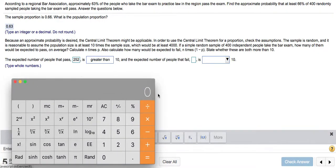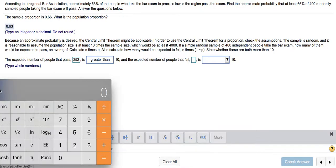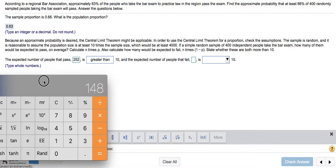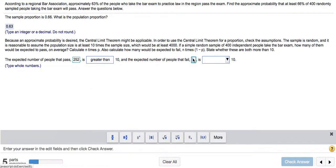Now the number of people that we expect to fail - to answer this, we take 400, but now we're going to multiply it by 1 minus p. So 1 minus p, that's 1 minus 0.63, or 0.37. We're going to multiply 0.37 by 400, and we get 148. That's how many people will probably fail. And this is also greater than 10.